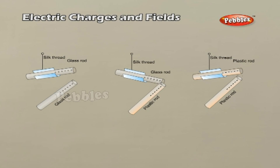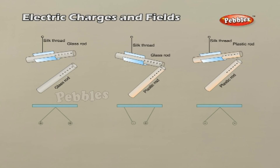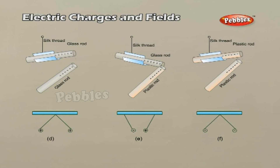The pith balls are also repelled by the rod. A similar effect is found if the pith balls are touched with a glass rod rubbed with silk, as in figure E. A dramatic observation is that a pith ball touched with a glass rod attracts another pith ball touched with a plastic rod, as in figure F. It was therefore concluded that there are only two kinds of electric charge. Like charges repel and unlike charges attract each other. The property which differentiates the two kinds of charges is called the polarity of charge.